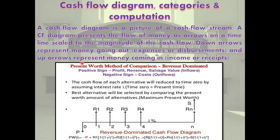It is also known as the present worth method of comparisons — Revenue Dominated. Positive signs mean profit, revenue, salvage value, and inflows; negative signs mean cost outflows. The equation is: PW(i) = −P + R1 × [1/(1+i)^1] + R2 × [1/(1+i)^2] + ... + Rj × [1/(1+i)^j] + S × [1/(1+i)^n].